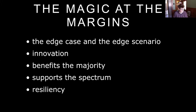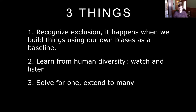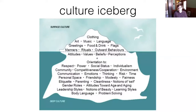The three things I want to focus on are: recognizing exclusion — it happens when we start from our own assumptions and biases; learning from human diversity — a watch-and-listen opportunity; and solving for one and extending to many. To start with, I want to point out some of the ways we see people — we see the top of the iceberg above the surface. This is the culture iceberg. We see their clothing, the food they eat, some of their manners and rituals, their outward behaviors.